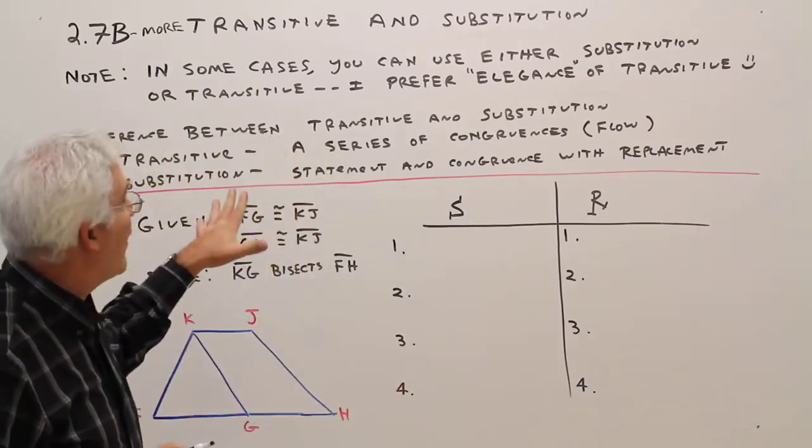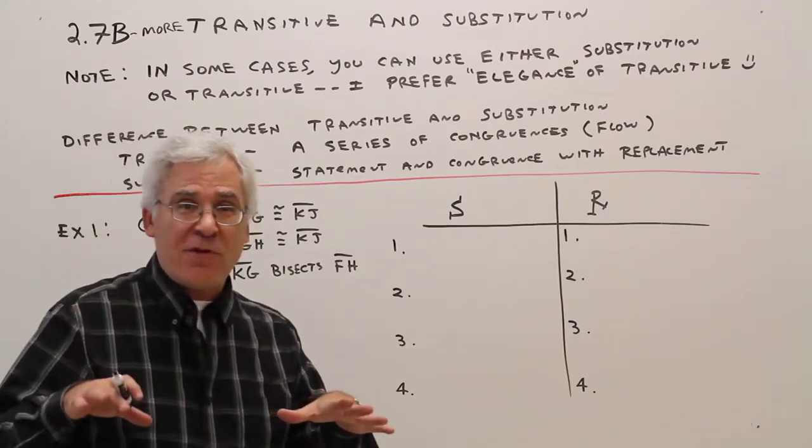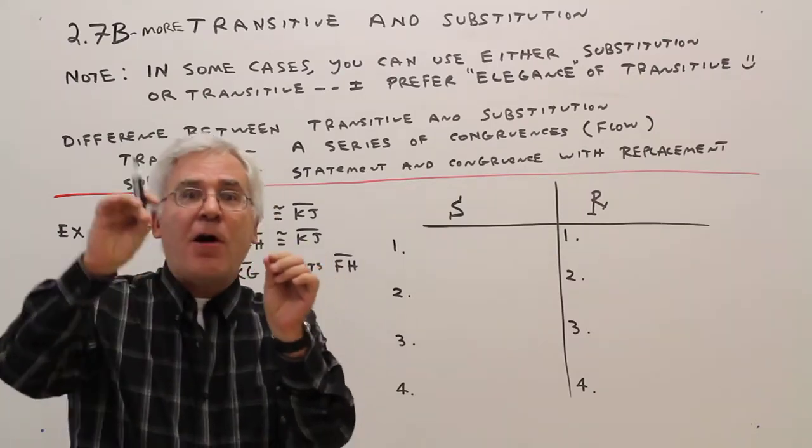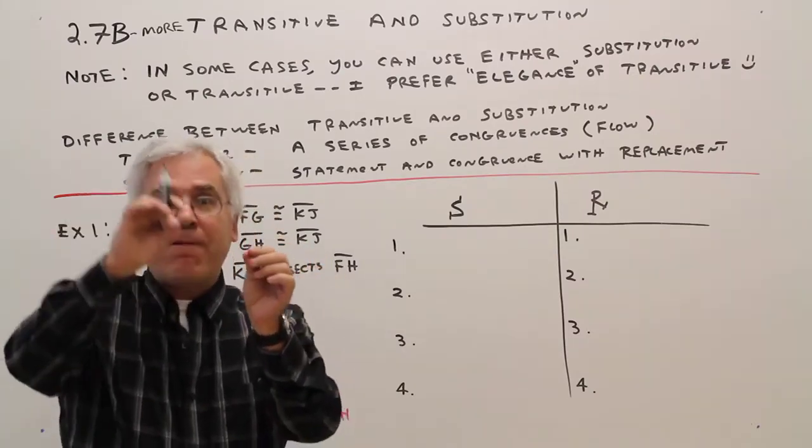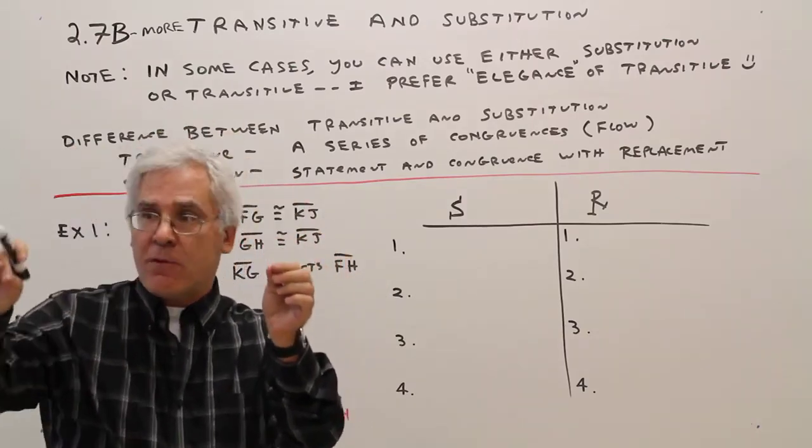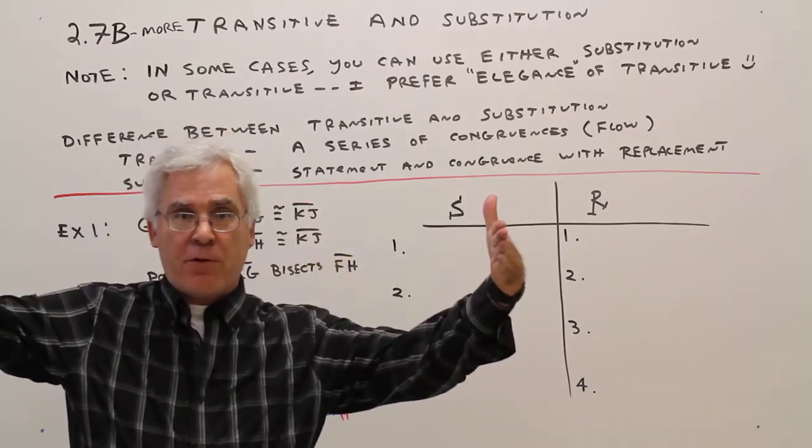Let's emphasize the difference between the two because some students get confused. Transitive is a series of congruences or a flow path of congruence: you're congruent to you, you're congruent to you, you're congruent to you, therefore the outers are congruent.